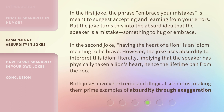In the first joke, the phrase 'embrace your mistakes' is meant to suggest accepting and learning from your errors. But the joke turns this into the absurd idea that the speaker is a mistake — something to hug or embrace. In the second joke, 'having the heart of a lion' is an idiom meaning to be brave. However, the joke uses absurdity to interpret this idiom literally, implying that the speaker has physically taken a lion's heart — hence the lifetime ban from the zoo. Both jokes involve extreme and illogical scenarios, making them prime examples of absurdity through exaggeration.